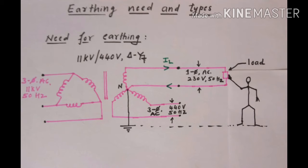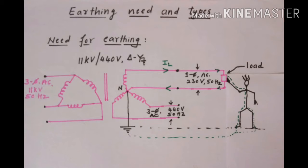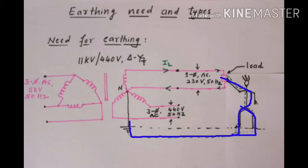When operating personnel comes in contact with the casing of the load, the load current divides into two paths, one through the neutral and other through the body of operating personnel. The current that flows through the body of operating personnel is called leakage current and due to this leakage current, operating personnel gets electric shock and this electric shock may lead to injuries and even death.